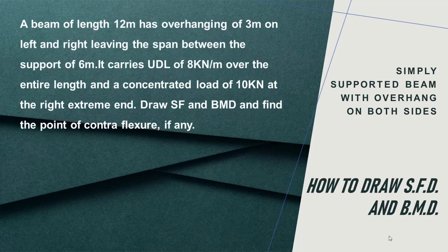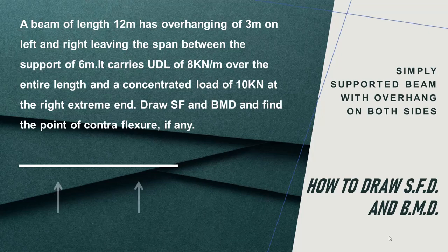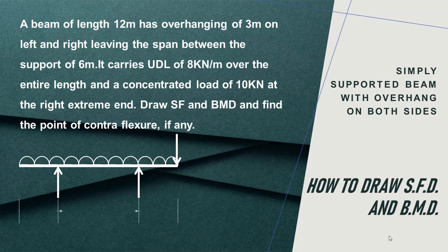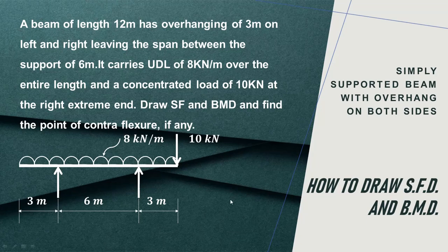In this video we will see how to draw shear force and bending moment diagram in case of a simply supported beam with overhang on both sides, carrying a point load or concentrated load at the end as shown in the figure. The beam length is 12 meters, the supported length is 6 meters, with 3 meter overhang on the left and right hand sides, and it carries a concentrated load of 10 kilonewtons at the end.